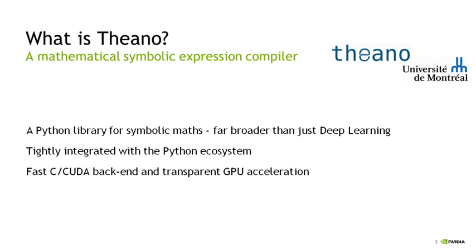Theano is tightly integrated with the Python ecosystem. The syntax of Theano is a lot like NumPy, the Python numerical matrix library. It has a very fast C and CUDA backend, so when functions are compiled from their symbolic representation into functions that can be applied to numerical data, this is done transparently for different computational architectures — in particular CPU and GPU — and you get the benefits of running on those different architectures.